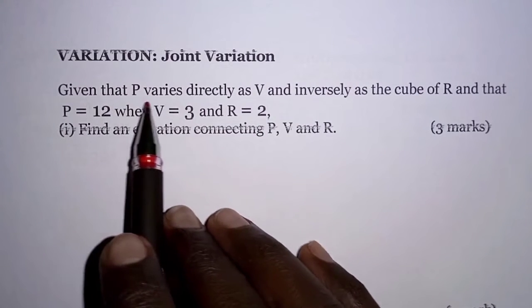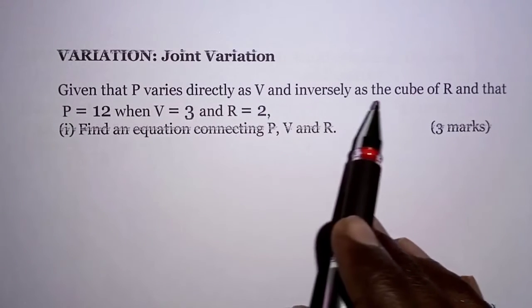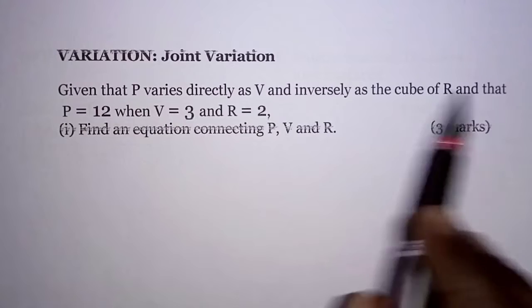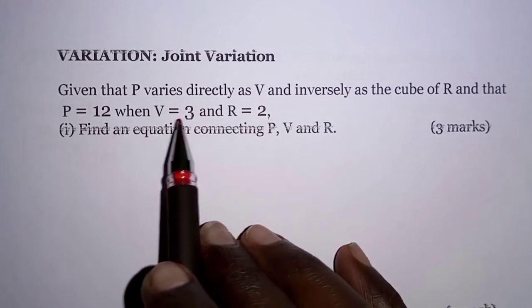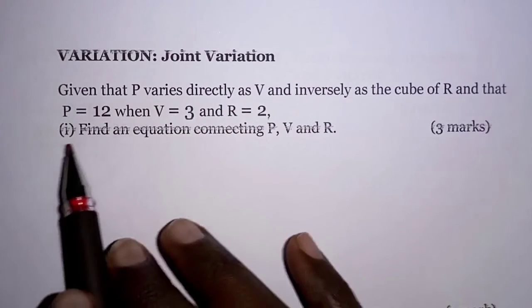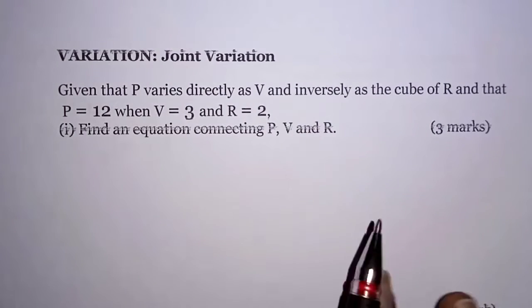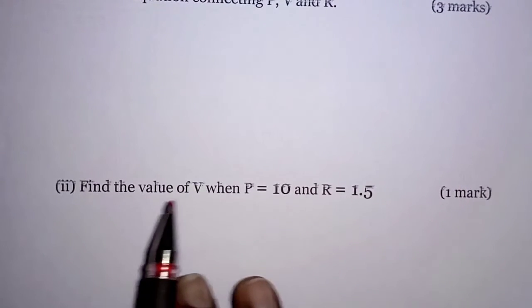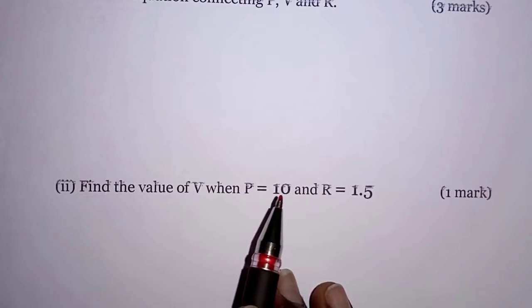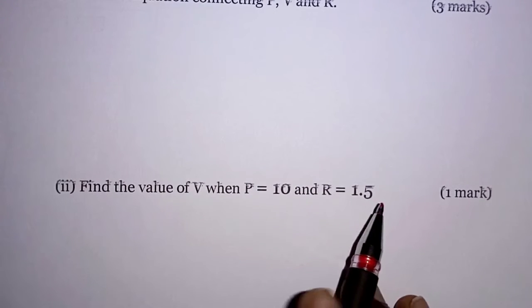The question reads: given that P varies directly as V and inversely as the cube of R, and that P is 12 when V is 3 and R is 2, find an equation connecting P, V and R. Then part two: find the value of V when P is equal to 10 and R is 1.5.